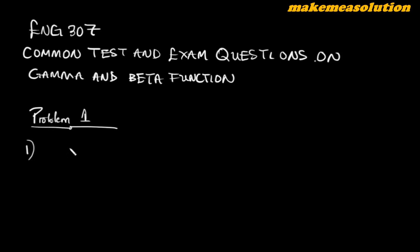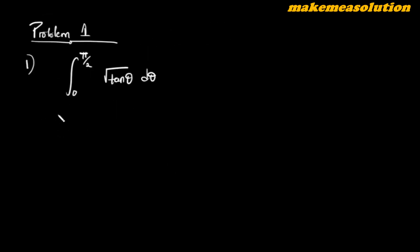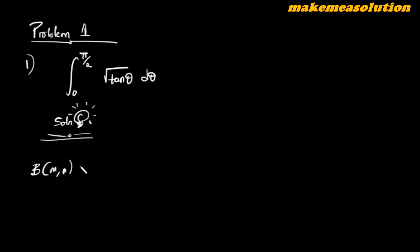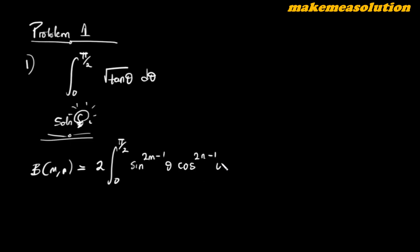In Problem 1, we want to evaluate the integral from zero to π/2 of √(tan θ) dθ. To solve this problem, you need to recall that the beta function B(m, n) can be expressed in trigonometric form as two times the integral from zero to π/2 of sin^(2m-1)(θ) · cos^(2n-1)(θ) dθ.